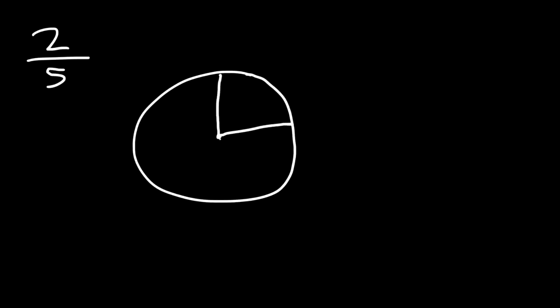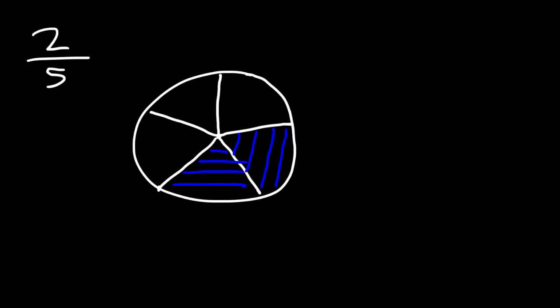That's going to be one, two, three, four, and five. So once you split it into five parts, all you need to do is shade two of those five parts. And so in this case, two fifths of the circle has been shaded.